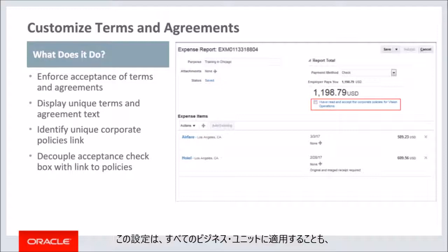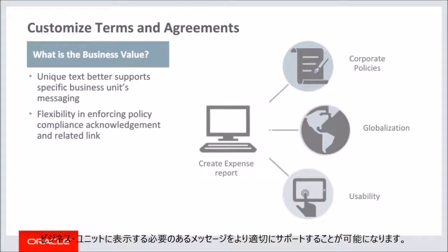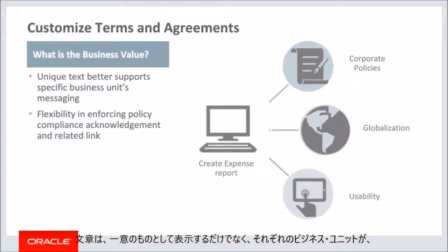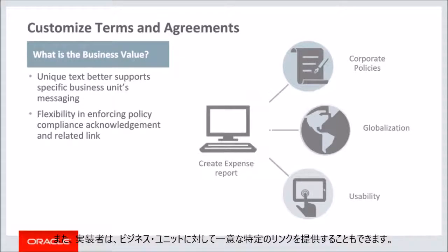This setup can be applied to all business units or set up for specific business units. Providing unique text better supports any message necessary to present to a business unit, as one single message may not be appropriate for all. Not only can the text be unique, but each business unit may follow their own requirement on whether to provide a link to their corporate policies, giving implementers flexibility to provide links specific to each business unit.